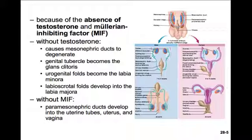In the absence of testosterone and in the absence of Müllerian inhibiting factor — both products of the testes — we'll see the female system develop. This is why it's the default system. If something goes wrong anywhere along the line with testosterone production or receptors for testosterone, we'll generally see more female characteristics. Without testosterone to support them, the mesonephric ducts degenerate. The genital tubercle becomes the glans clitoris instead of the glans penis, and the urogenital folds become the labia minora instead of penile tissue. The labioscrotal folds develop into the labia majora rather than the scrotum.